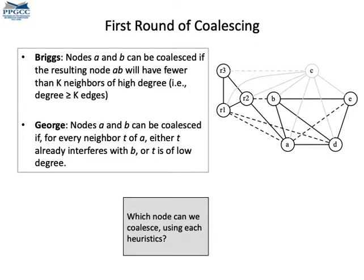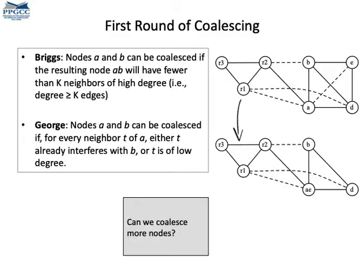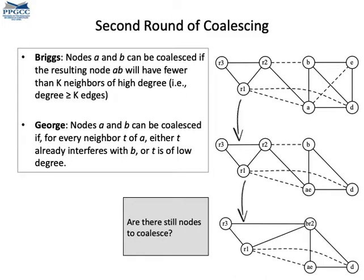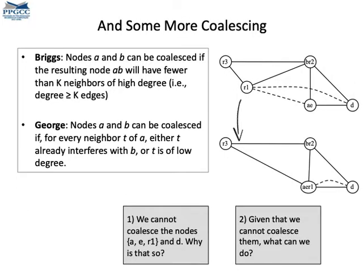We can then coalesce a few variables. If you recall, we have seen two criteria to run coalescing. I'm copying them in this figure. Perhaps you would like to stop the video and check which pairs of variables we can coalesce in the graph on the right. The order in which we coalesce the variables is not really important in this case. We can merge vertices A and E, for instance. We can also merge B and R2 using George's criterion. Well, Briggs' criterion would also work in this case.